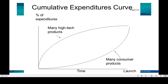Now we shall look at the cumulative expenditures curve. This graph shows, in terms of the types of products, the cumulative expenditures that will be costly when you develop two types of products — either high-tech products or consumer products. On the X axis it shows the time of the launch, and on the Y axis it shows the percentage of expenditures. The early expenditure curve represents product development shown in the technical fields.